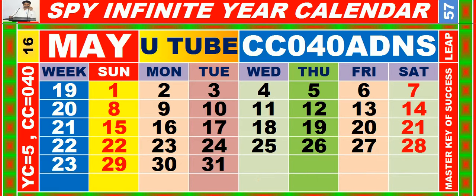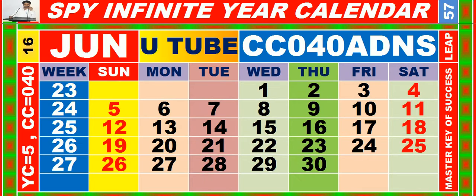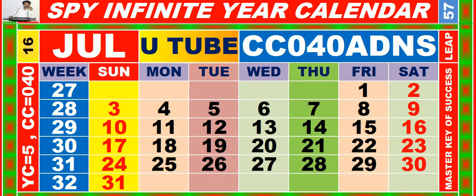Calendar for the month of May having calendar code equal to 0 for 0. Calendar for the month of June having calendar code equal to 0 for 0. Calendar for the month of July having calendar code equal to 0 for 0.